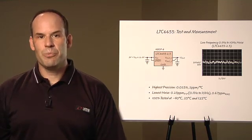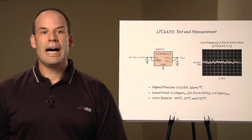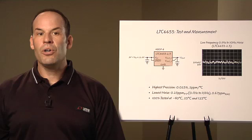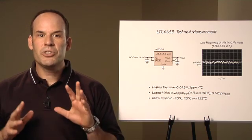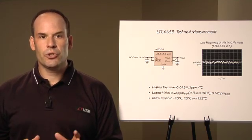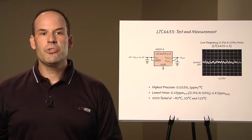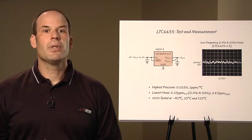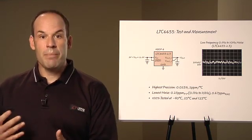First is test and measurement. These systems require the highest precision and stability without compromise. They also must have the lowest possible noise to ensure a repeatable measurement. Examples include high precision multimeters, electronic balances, and automated test equipment.